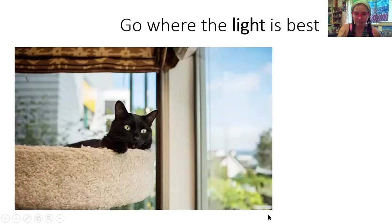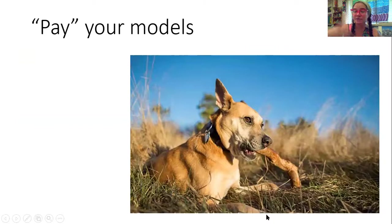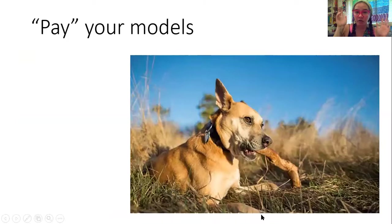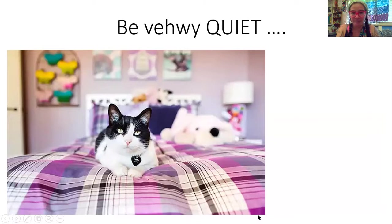You want to pay your models — this is very important in the art world. You don't just have them model for free. They need some sort of payment. So have some treats ready, especially if you're doing a dog or a cat. Chances are, by paying your pet, they will model better for you because they know there's incentive after the photo shoot. And you have to be very, very quiet when you're shooting animals because they will get easily disturbed. If you're trying to take a photograph, you need them to be still, so you have to be quiet before you start shooting them.